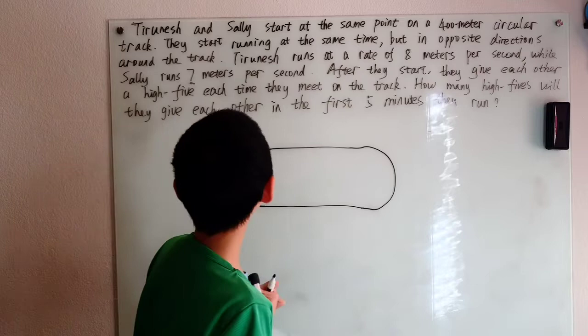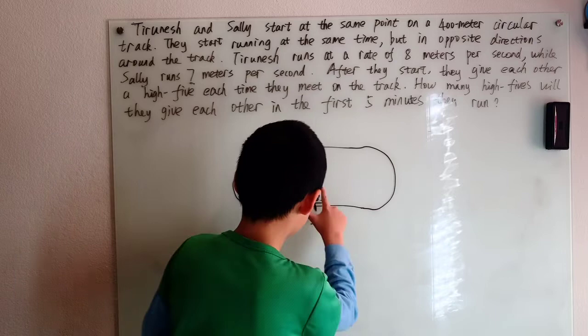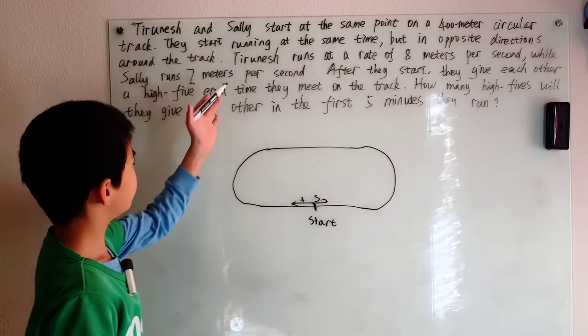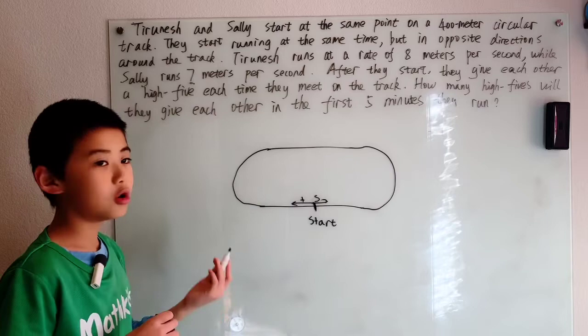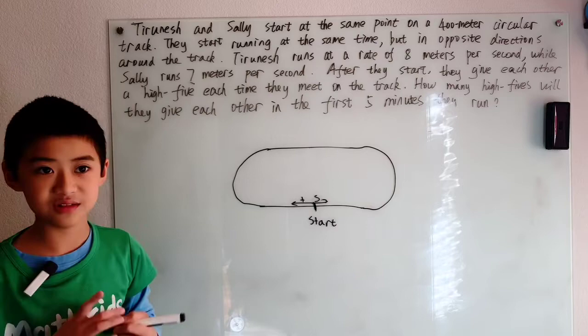So whatever. Just say they start right there. Tranish runs one way and Sally runs the other way. Well, if Tranish runs at a rate of 8 meters per second, it's going to take 50 seconds to run the whole track, right? And when Tranish does run the whole track, Sally runs at 7 meters per second. That's only a 1 meter per second difference.